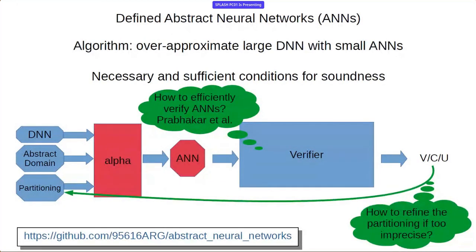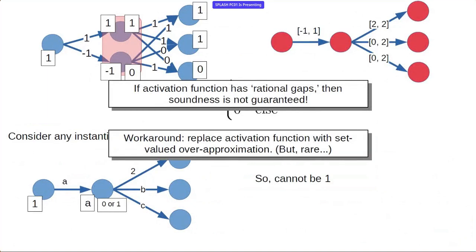Audience question about what you gain from using a richer abstract domain. The speaker responds: it would be nice to have a concrete example where intervals don't work but relational domains like polytopes give much better results. You can say this weight is between zero and two but this weight has to be two minus that weight — giving fewer instantiations and fewer possible outputs. More work is needed on how to actually execute the abstract neural networks.